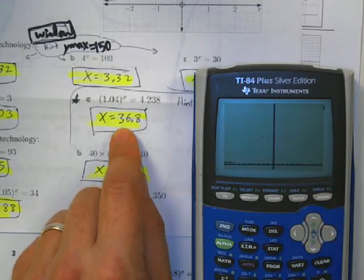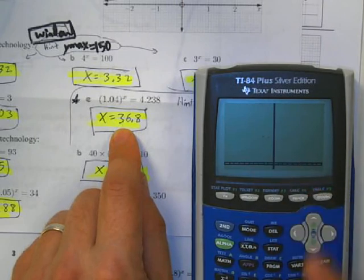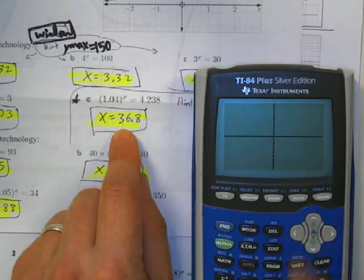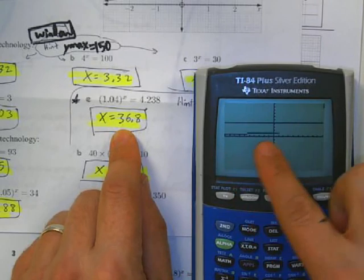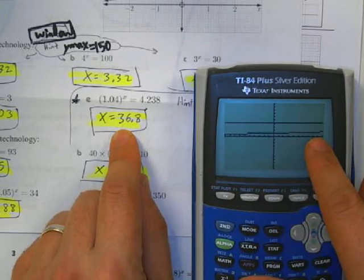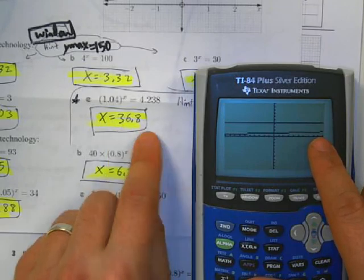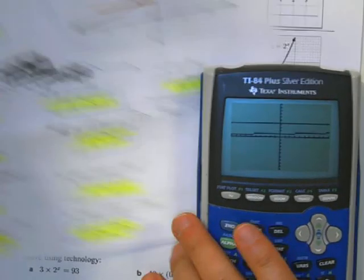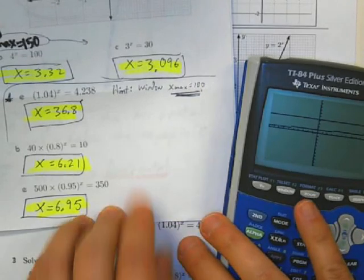I'm going to hit zoom and 6, and that gets me a standard 10 by 10 window. You can see the exponential graph, it's going up and up, but very, very slowly, right? So, I need to, in this case, I need to change the x max of the window.